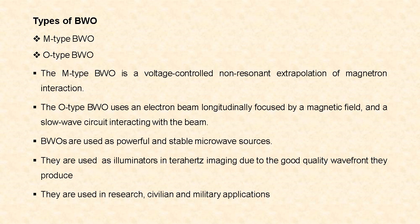The O-type backward wave oscillator uses an electron beam longitudinally focused by a magnetic field, and the slow wave structure interacts with the beam. The output power of O-type BWO ranges from 1 mW at 1000 GHz to 50 mW at 200 GHz. These backward wave oscillators are used as powerful and stable microwave sources, as illuminators in terahertz imaging due to the good quality waveform they produce, and also in research, civilian and military applications.